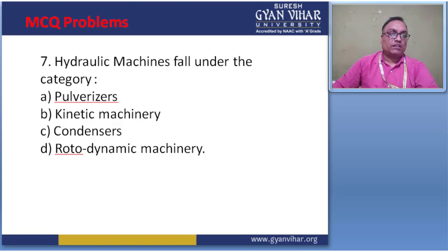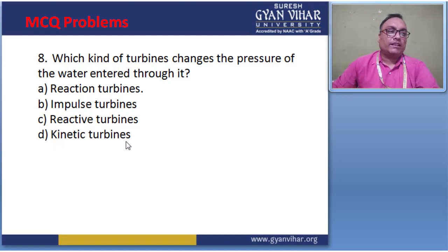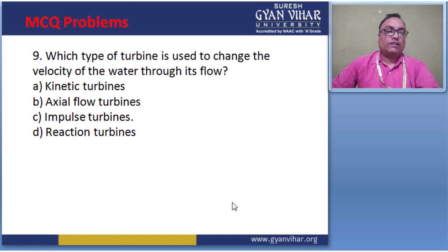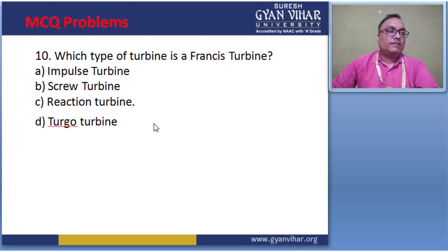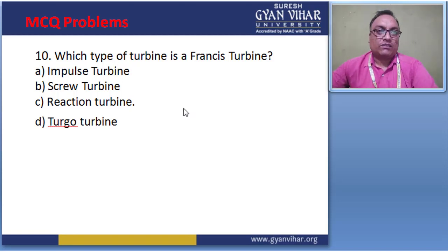Q7 — Hydraulic machines fall under the category of: pulverizers, kinetic machinery, condenser, rotodynamic machinery. Answer: D, rotodynamic machinery. Q8 — Which kind of turbine changes the pressure of water entered through it? Options: reaction turbine, impulse turbine, reactive turbine, kinetic turbine. Answer: reaction turbine. Q9 — Which type of turbine changes the velocity of water through its flow? Options: kinetic turbine, axial flow turbine, impulse turbine, reaction turbine. Answer: impulse turbine. Q10 — Which type of turbine is a transistor turbine? Options: impulse, screw, reaction, turbo. Answer: C, reaction type of turbine.